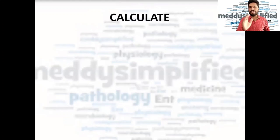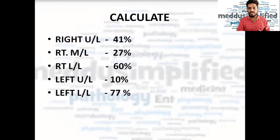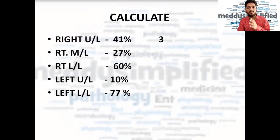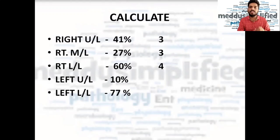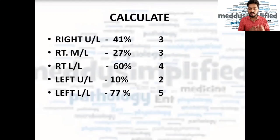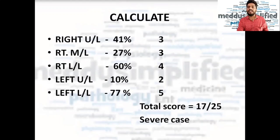Let's do another example. The right upper lobe is 41% involved — that is between twenty-six and fifty percent, so score three. The right middle lobe is 27% involved — again between twenty-five and fifty percent, so score three. The right lower lobe is 60% involved — more than fifty but less than seventy-five percent, so score four. The left upper lobe is 10% involved — more than five but less than twenty-five percent, so score two. The left lower lobe is 77% involved — more than 75%, so score five. Totalling: three plus three plus four plus two plus five equals 17 by 25 — a severe case of COVID-19.